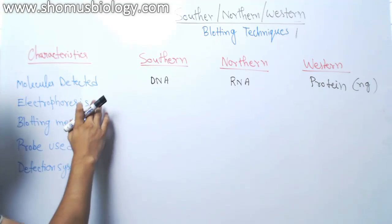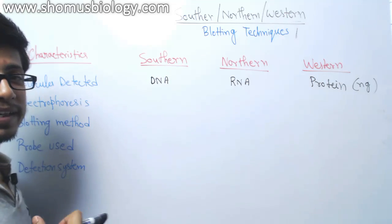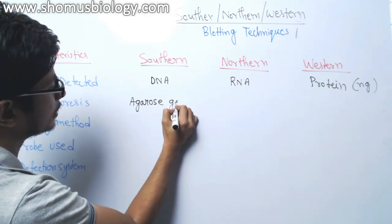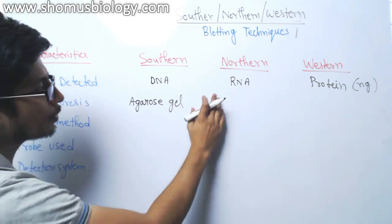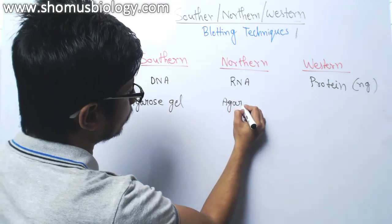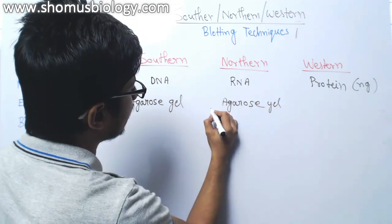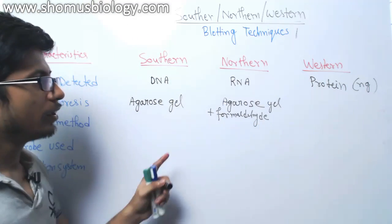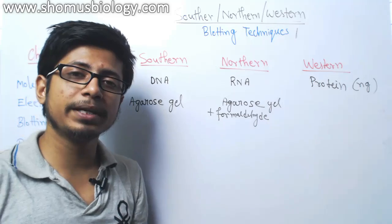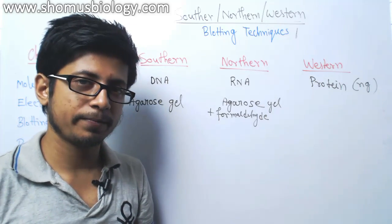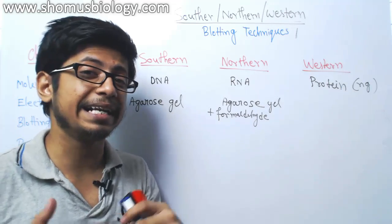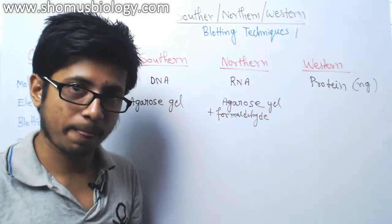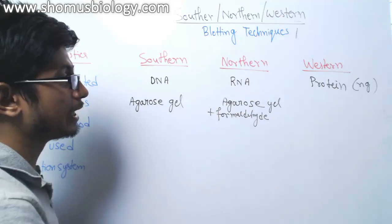In case of southern blotting, for the separation of DNA we use agarose gel electrophoresis. In case of northern blotting, we also use agarose gel, but that agarose gel contains formaldehyde. This is because in northern blotting, RNAs are normally extracted in a secondary structure format, so we need to resolve that secondary structure to make the RNA linear, so that separation can be done based on length.